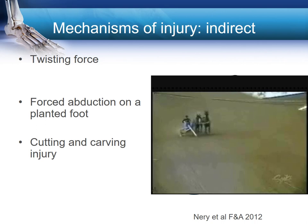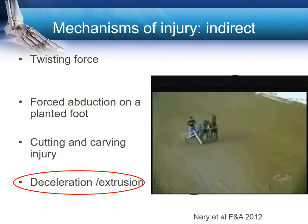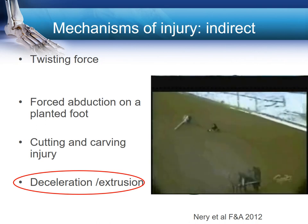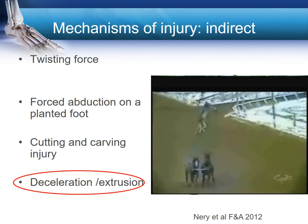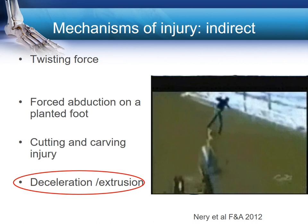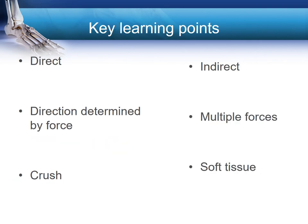An indirect twisting force occurs with the foot fixed to the floor whilst the body rotates off a fixed forefoot. This classically happens in stud sports or equine situations where the forefoot is in a stirrup and the person is thrown from the horse. In summary: Lisfranc injuries can occur from an indirect mechanism with the forefoot fixed and the body rotating, or a direct mechanism where the direction of the resulting deformity is determined by the direction and location of force application. Soft tissues are significantly injured in Lisfranc injuries and must always be considered.